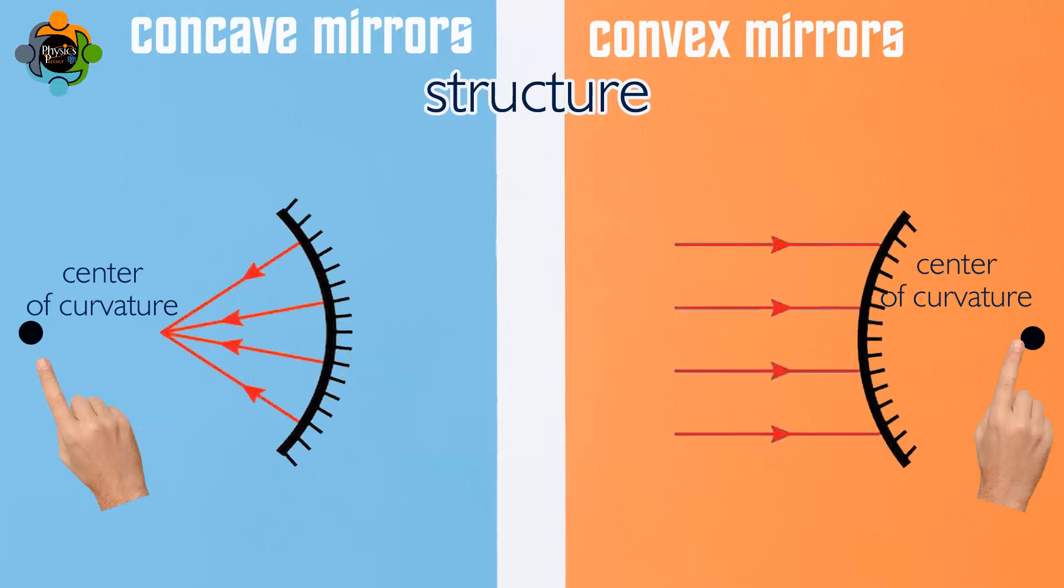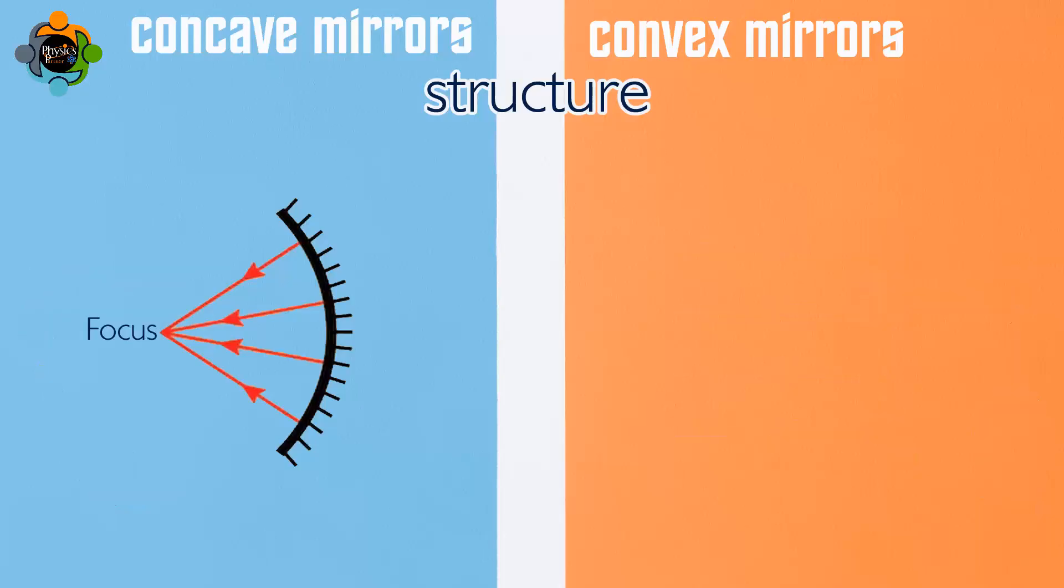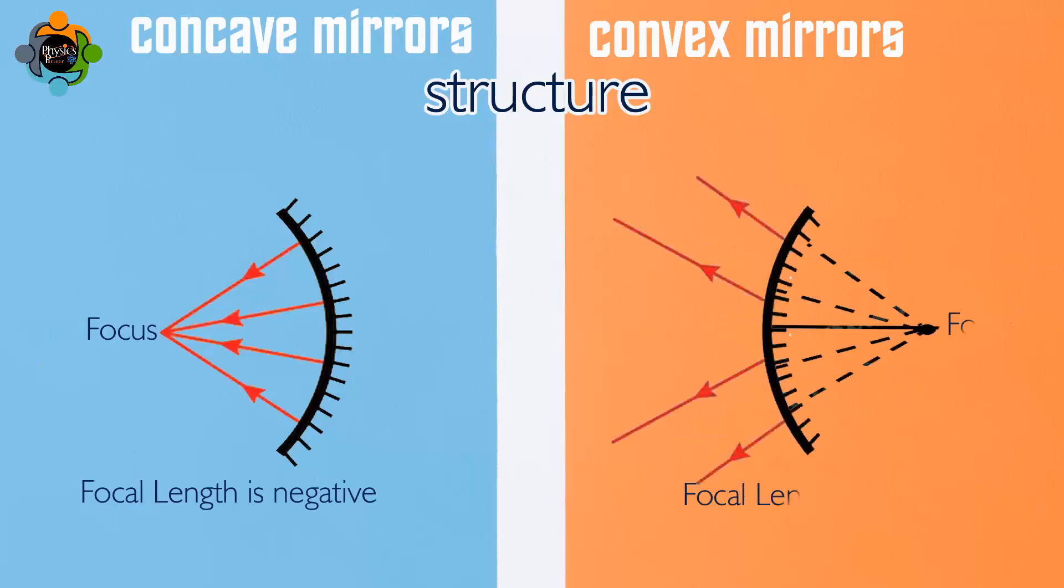The center of curvature is located on the opposite side from the reflecting surface. The position of the focus also differs significantly. For a concave mirror, the focus lies in front of the mirror, meaning its focal length is considered negative.